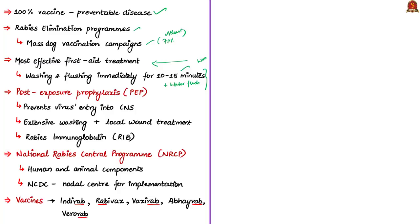Rabies development can be largely prevented if animal bites are managed appropriately and in time. Post-exposure prophylaxis (PEP) is the intermediate treatment of a bite victim after rabies exposure. PEP prevents virus entry into the central nervous system; otherwise it results in immediate death. PEP consists of extensive washing and local treatment of the wound, a course of potent rabies vaccine meeting WHO standards, and if suggested by a doctor, administration of Rabies Immunoglobulin (RIG).